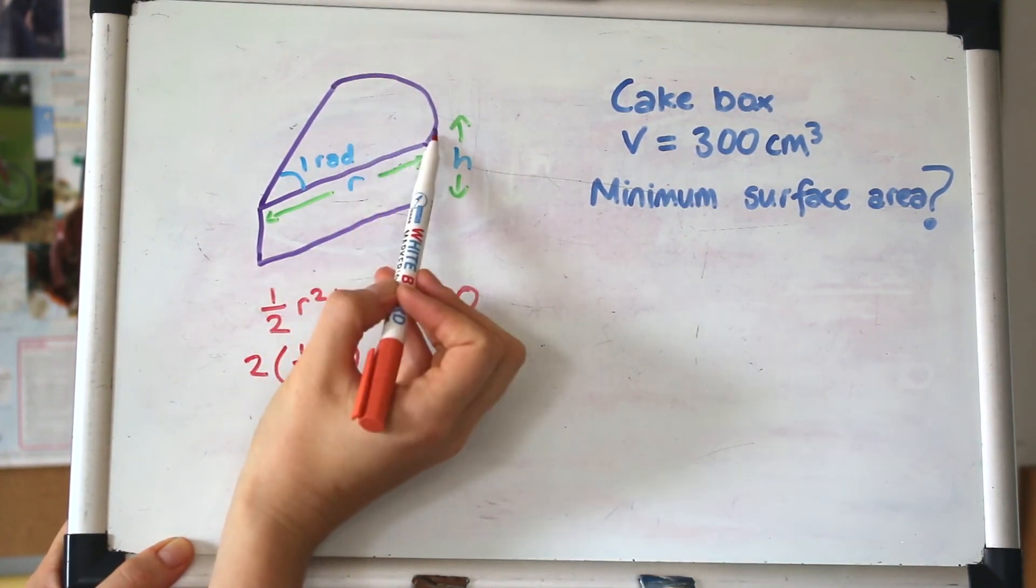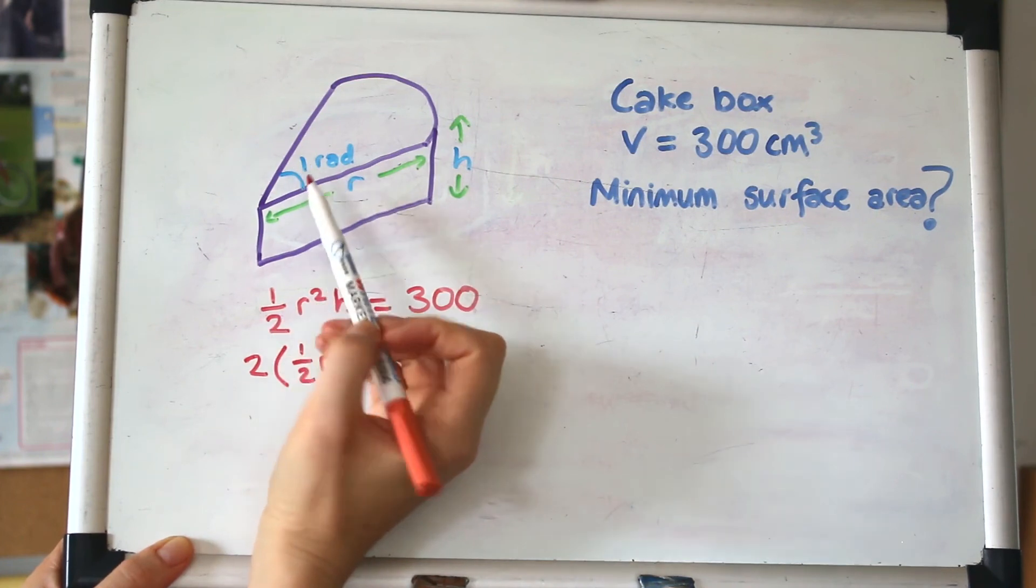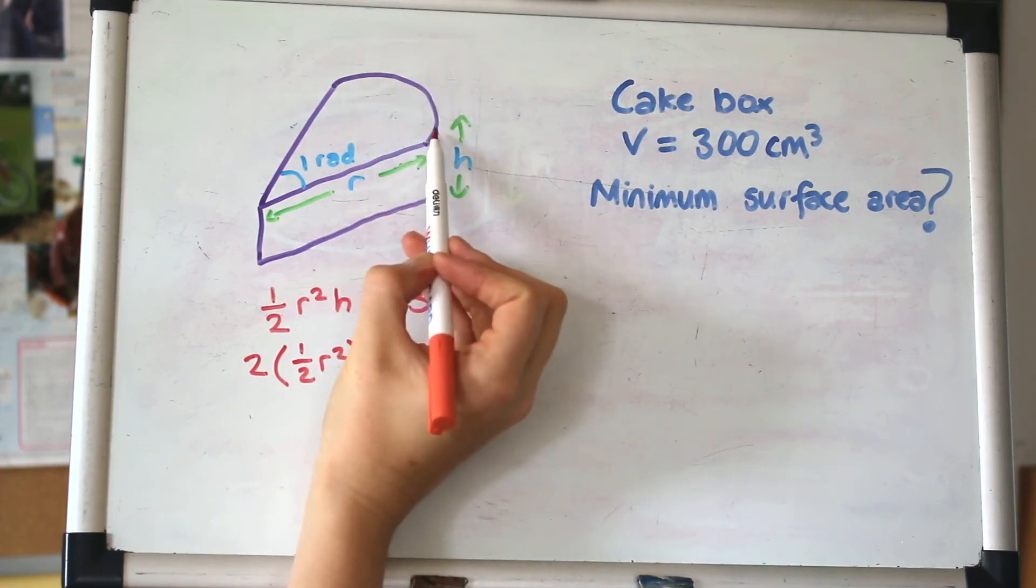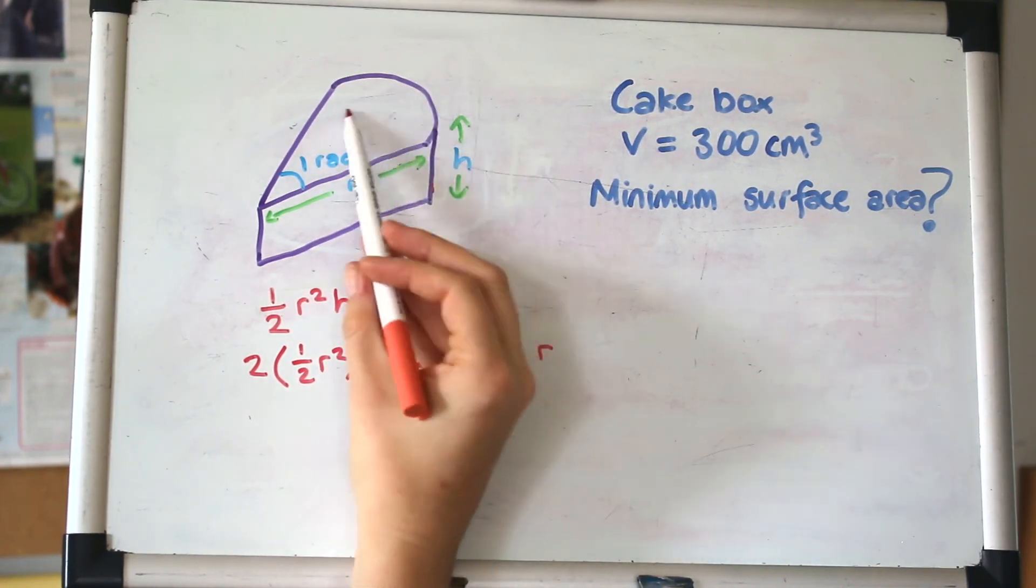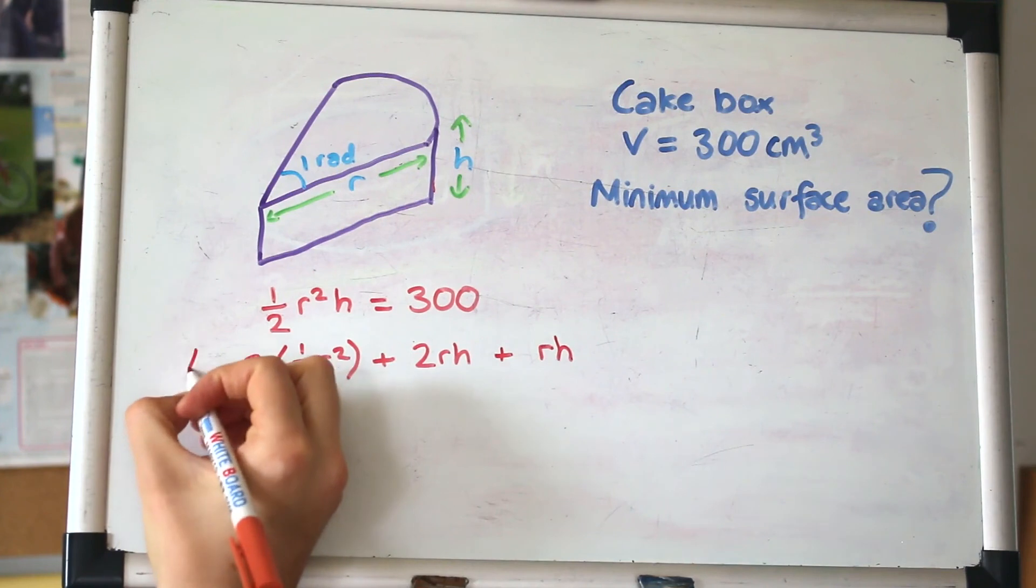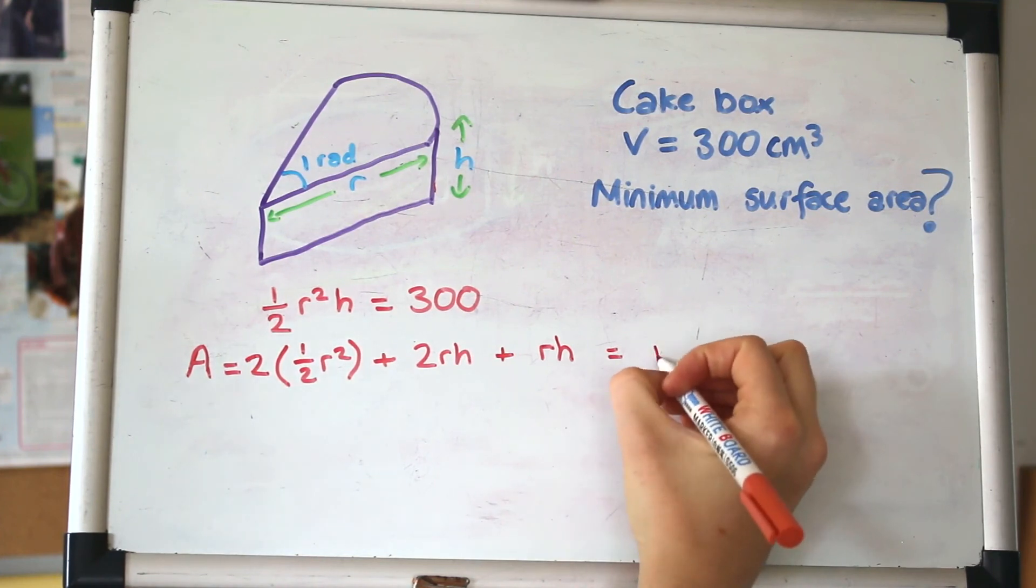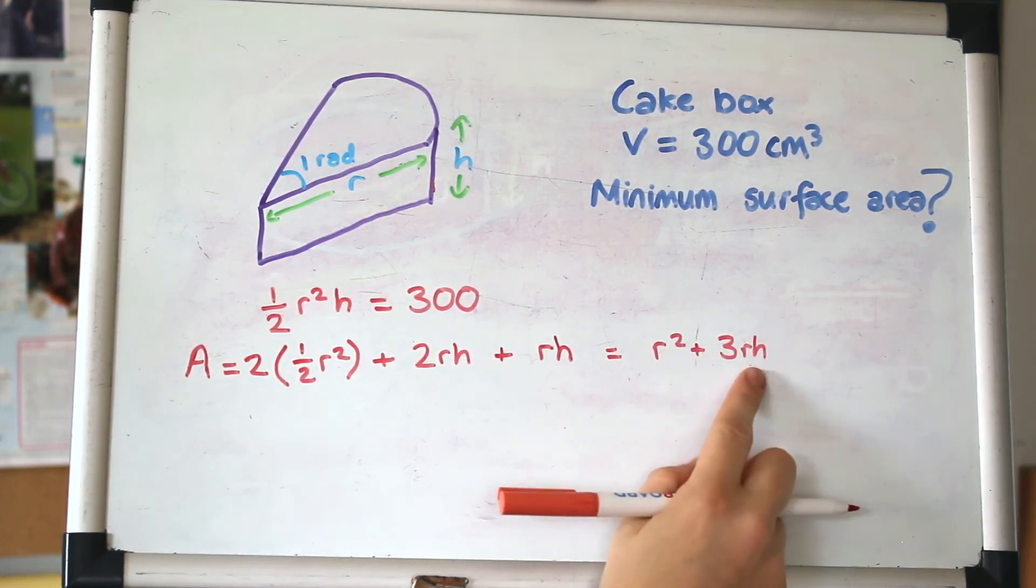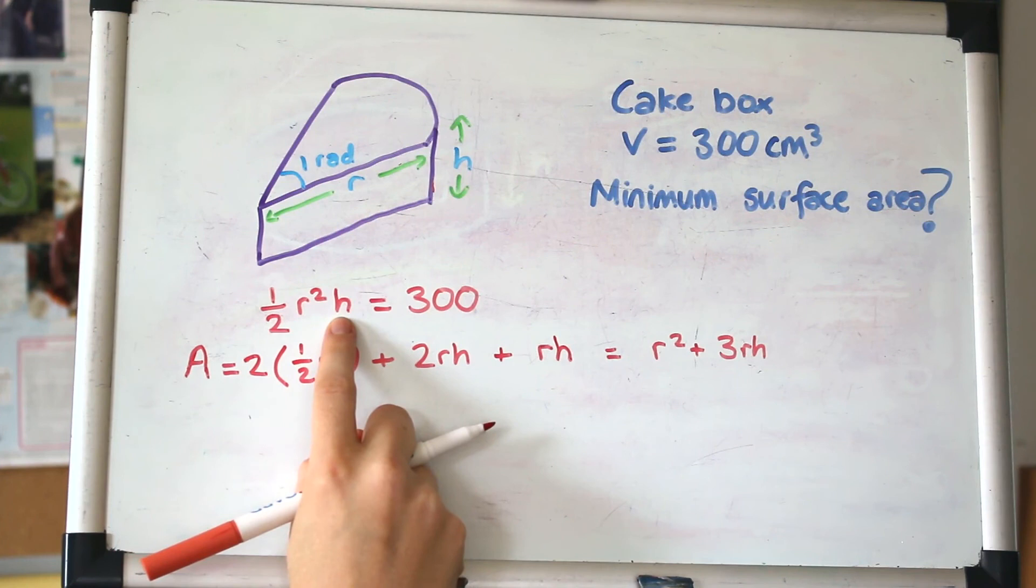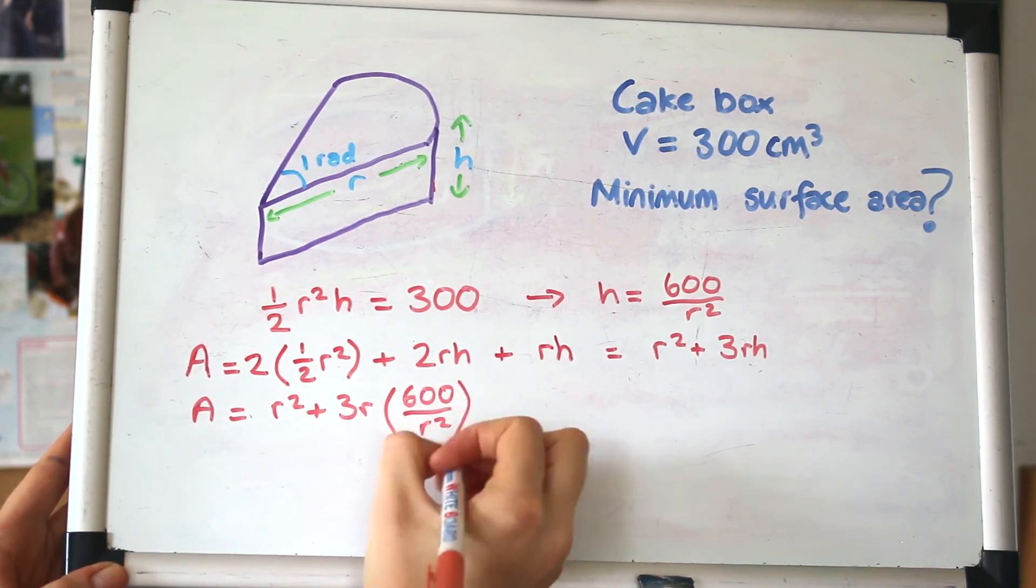Then we're adding on a rectangle here and on the other side as well. That'll be rh times 2. Then we've got the curved bit round the back of the box. That'll be h times the length, this curved length here. That is the arc length, which in a sector will be just r times the angle, rθ, which is r. So that's r². We've got two variables. Let's get rid of the h. We can rearrange this to make h the subject: h = 600/r².